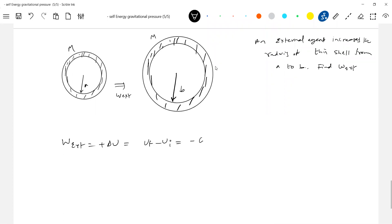What is the final energy? Minus gm squared by 2b. Minus of gm squared by 2a. This is the self-energy.